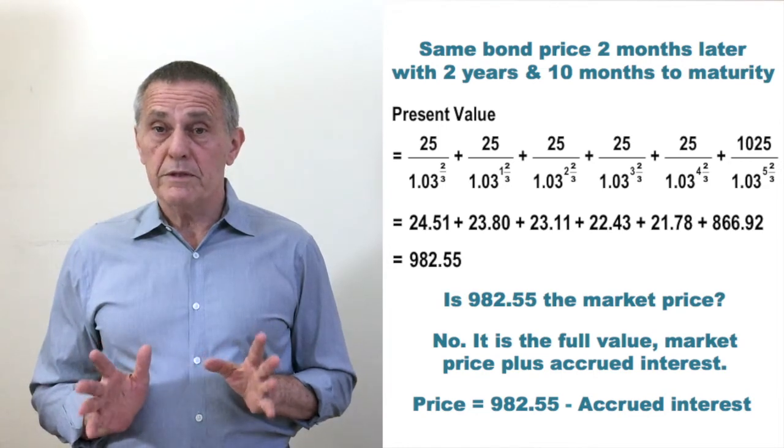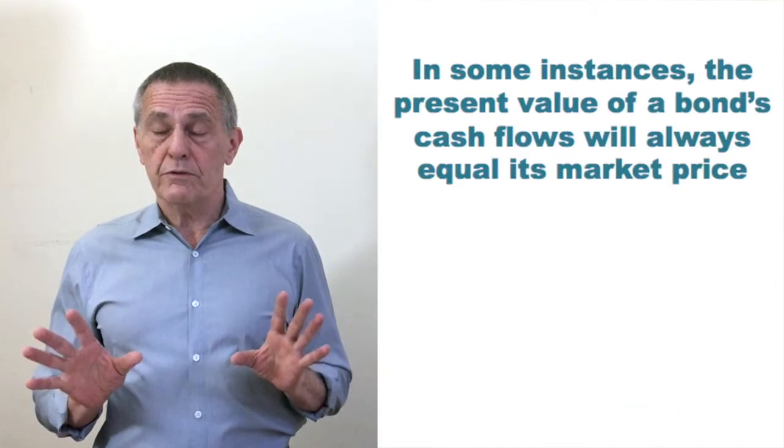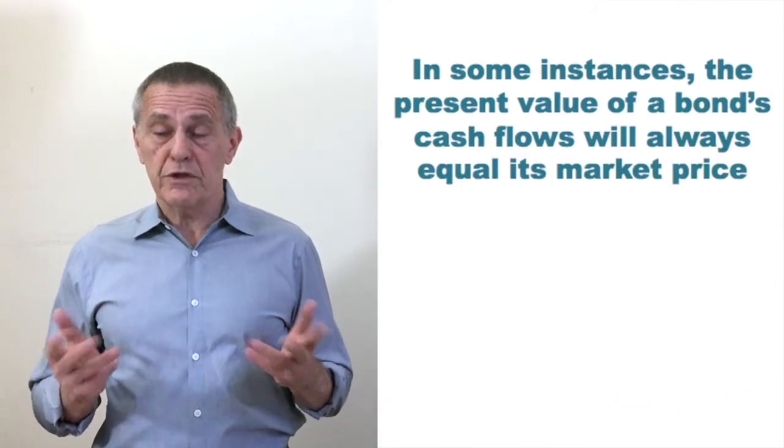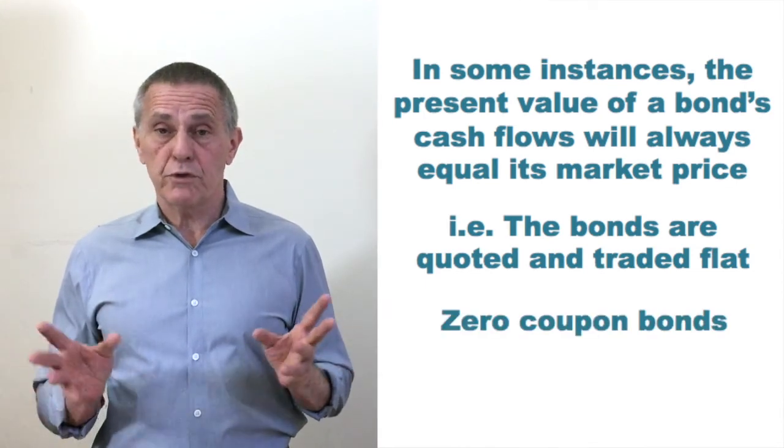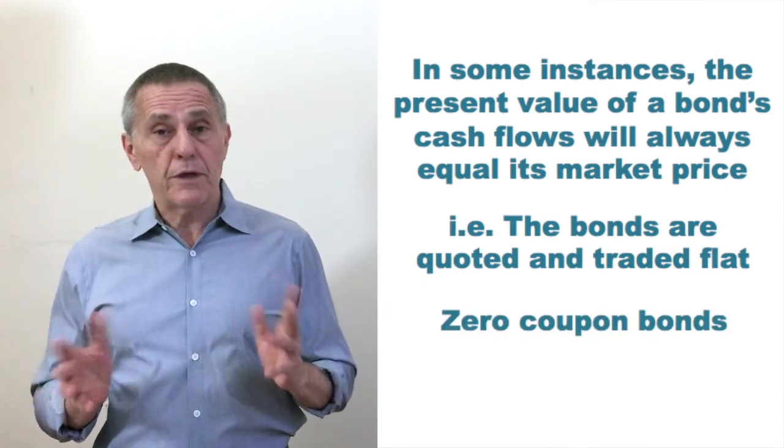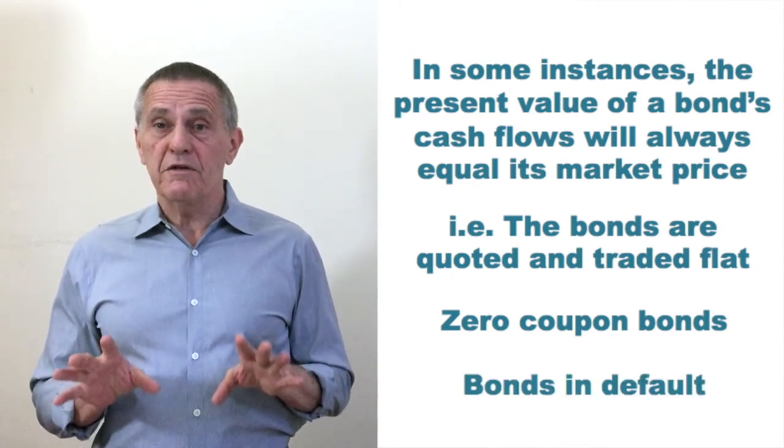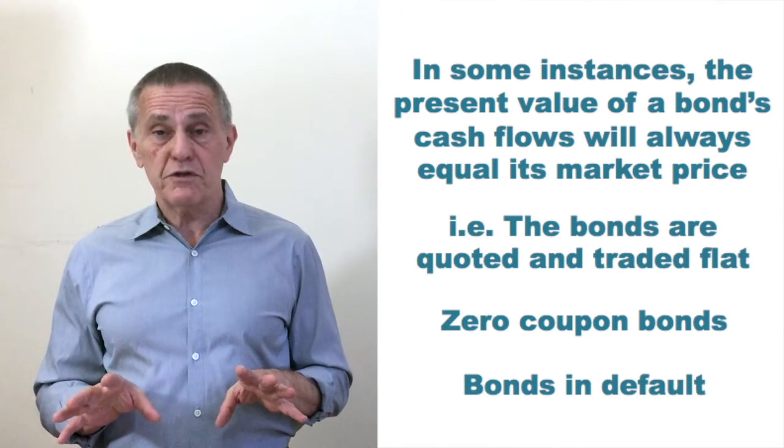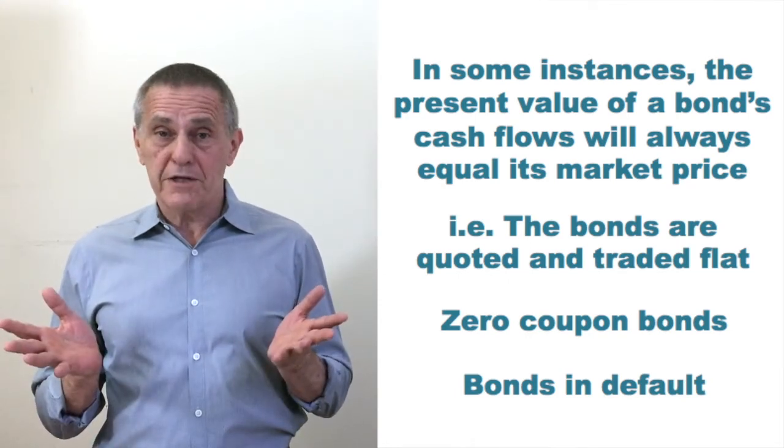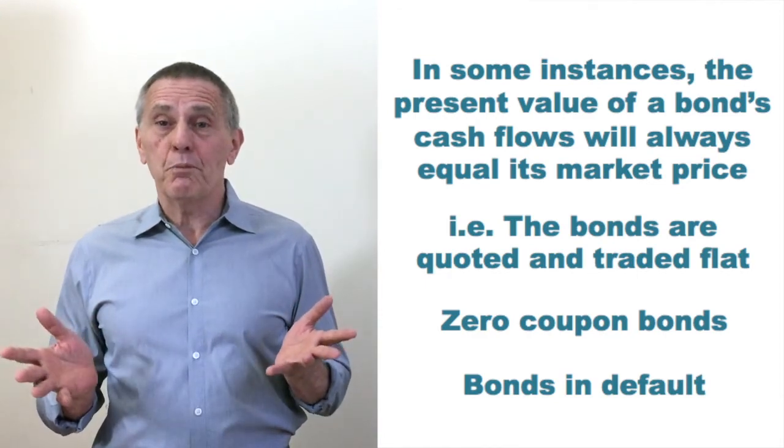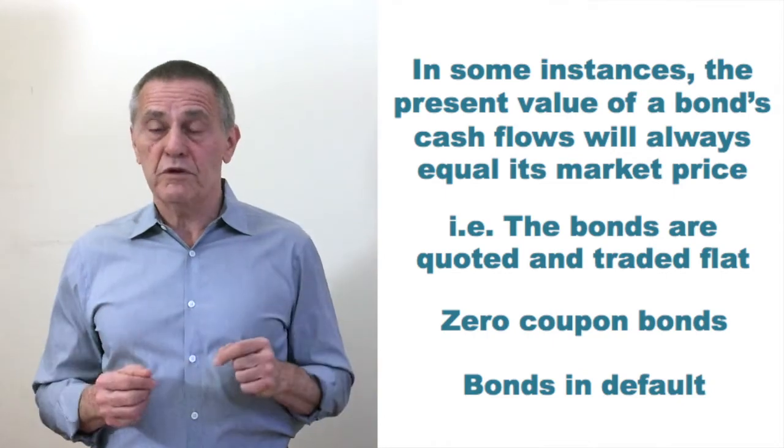So is the present value of the future cash flows ever synonymous with market price? Naturally where accrued interest doesn't intrude, the answer is yes. So zero coupon bonds. Since there is no coupon to accrue, the present value of the cash flows is the price. Or for coupon bonds in default, the convention for such securities is that they're quoted flat and trade flat. If the issuer hasn't been paying coupons recently, it would be inappropriate to price trade settlement based on some assumption about accrual of the next coupon.